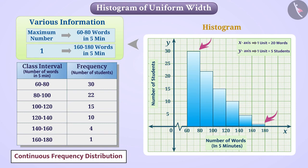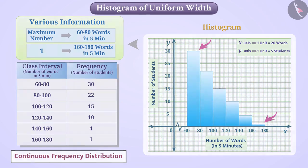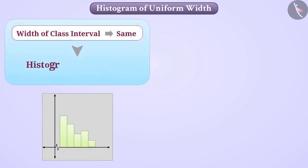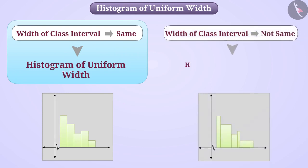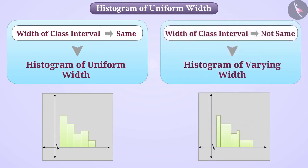When the class intervals have the same width, we get the histogram of uniform width. If the width of the class interval is not the same, then we get a histogram of varying width, which we will discuss in the next video.